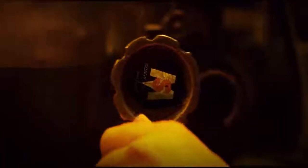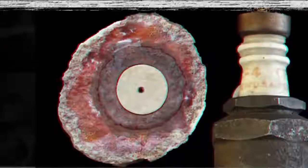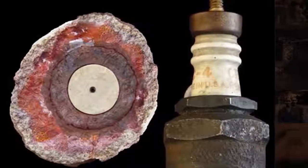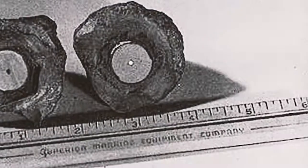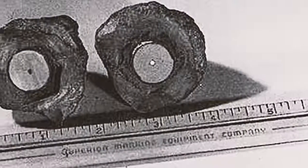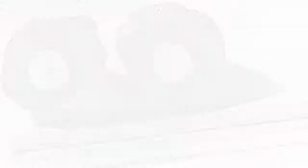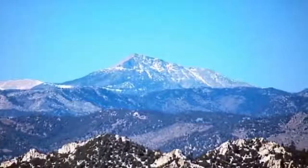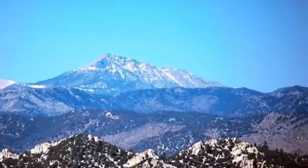Number two, the Coso artifact. People have called it the world's oldest spark plug, while skeptics have dismissed it as a geological anomaly. There is no doubt, however, that the Coso artifact is a complete mystery. In 1961, three rock hunters were looking for geodes in California's Coso Mountains to use for their gift and gem shop. Geodes are hollow rocks with mineral crystals like amethyst inside.